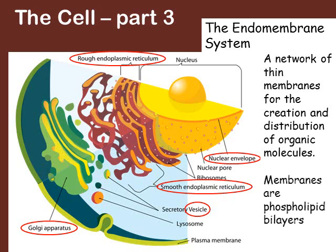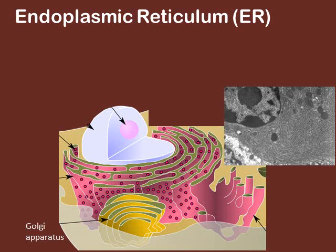Since they are membranous structures, remember that those membranes are simply phospholipid bilayers like we've seen before. The endoplasmic reticulum can be seen outside of the nucleus — all of these fine, thin membranous structures making up the endoplasmic reticulum.